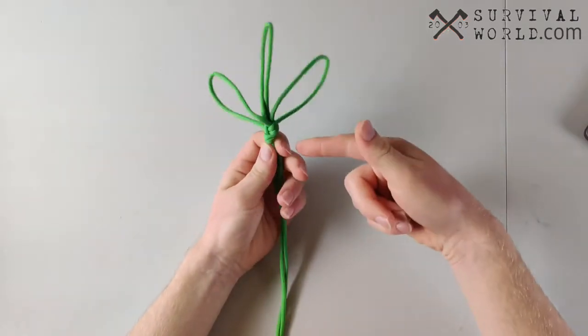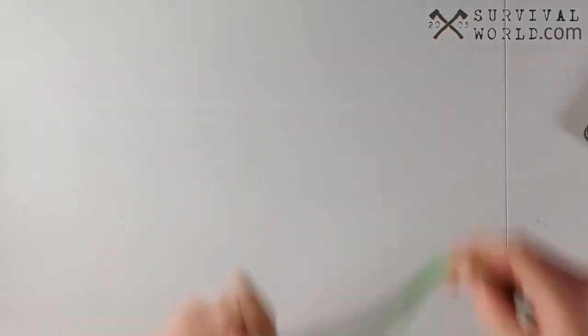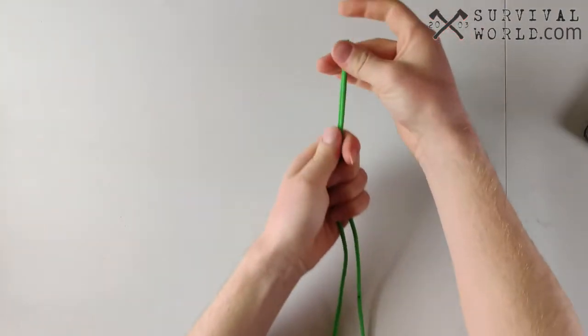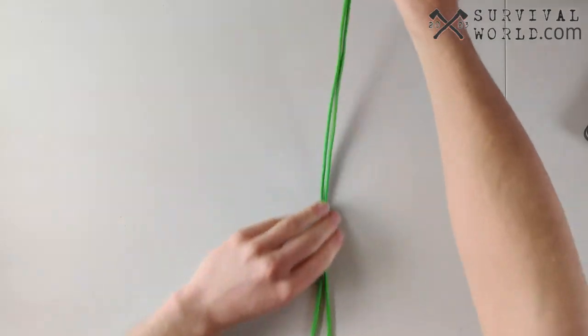So let's dive in on how to tie the triple bowline loop. We're going to start off and just double up our line right here, and with our doubled up line we're basically going to tie a bowline knot.